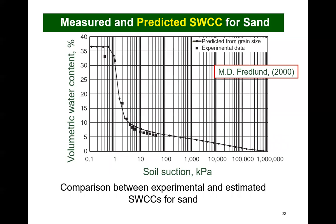Examples of pedo-transfer functions for predicting the soil water characteristic curve have been proposed by Arya and Paris in 1981 and by Mualem-Fredlund in 2000. A comparison between the drying SWCC estimated by the Mualem-Fredlund pedo-transfer function for sand and the measured SWCC shows good agreement. Pedo-transfer functions are known to be more reliable for uniform sands than for other soils, but are still considered a valuable tool used for many soil types in geotechnical engineering.